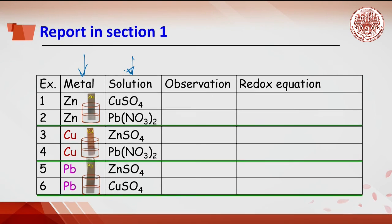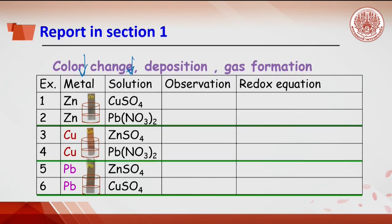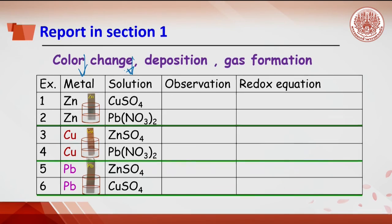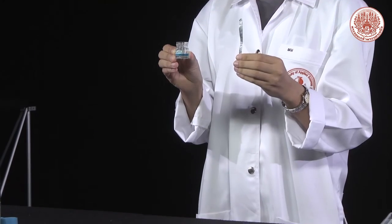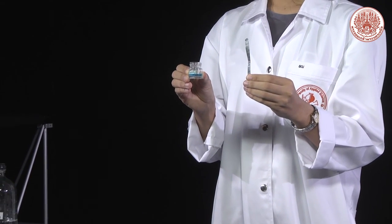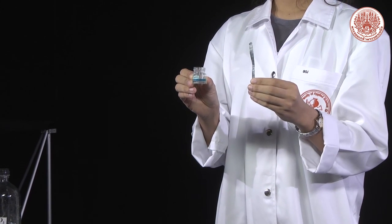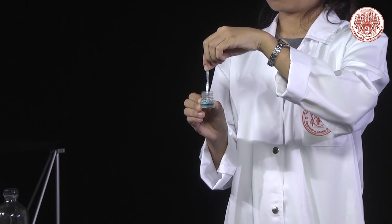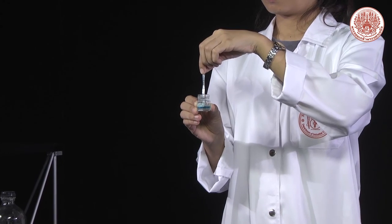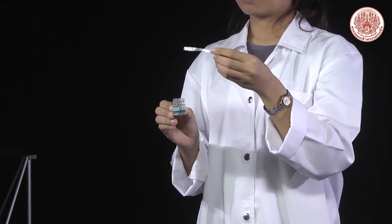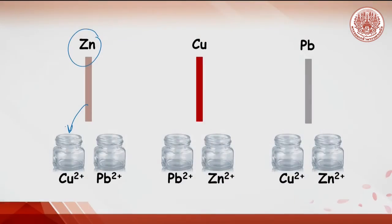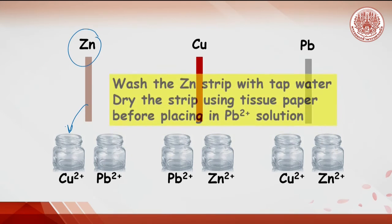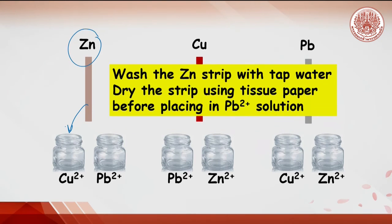The observation can be color change, deposition, or gas formation. For example, when placing a zinc strip into the copper solution, after 30 seconds record the observation. Wash the zinc strip with tap water and dry before doing other experiments.